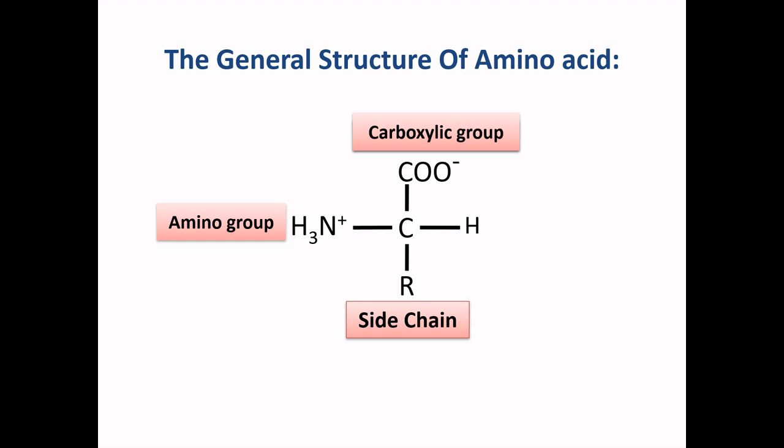Now let's see the general structure of an amino acid. An amino acid always has one amino group and one carboxylate group attached to the alpha carbon atom. Besides these, it has one side chain R group also attached to that alpha carbon. The grouping of amino acids is based on this side chain R group, which also gives different properties to amino acids.